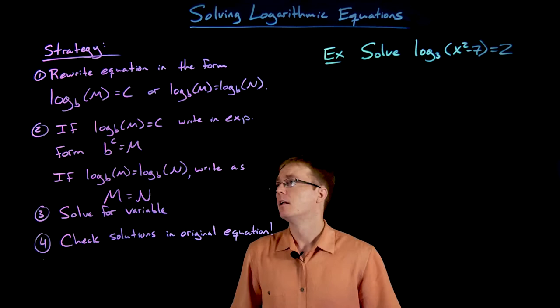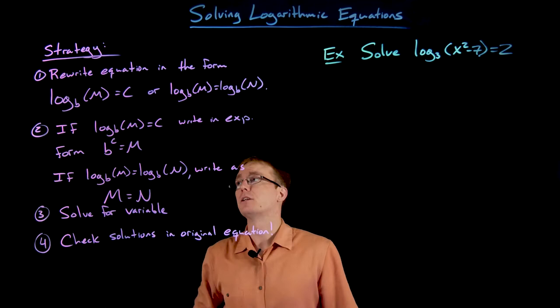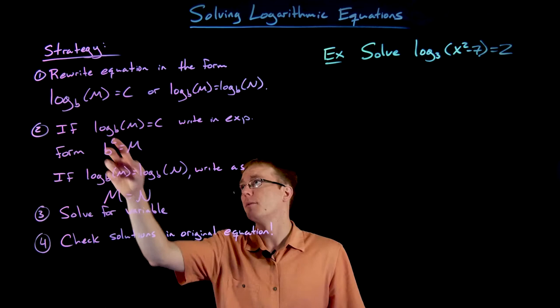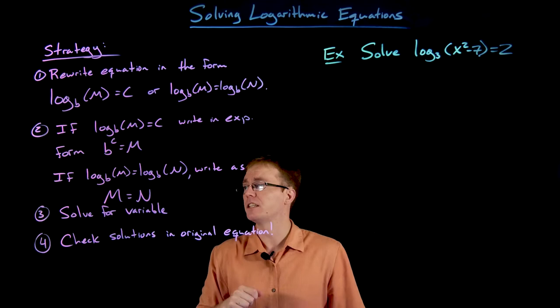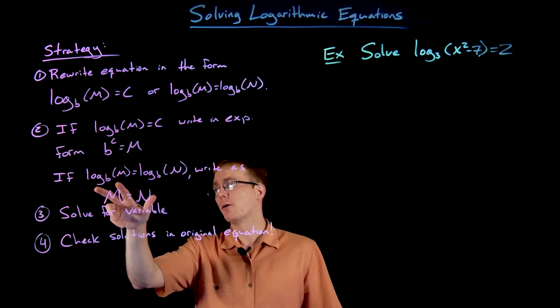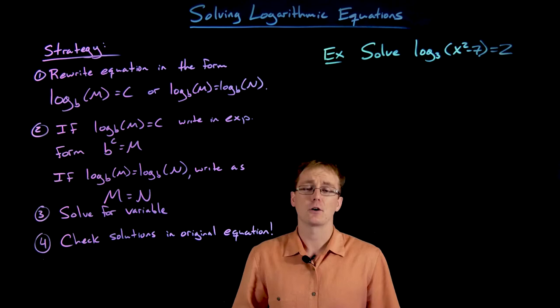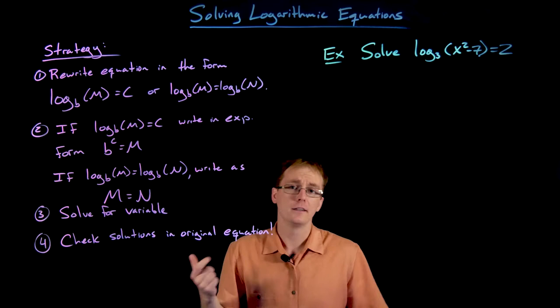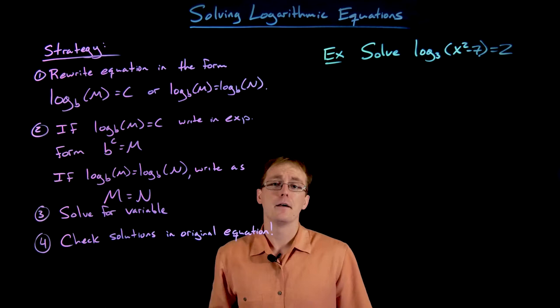We're going to have two paths to follow depending on how we are able to rewrite the original equation. If we can rewrite it as a single log equal to some number, we can convert the logarithmic form into its exponential form — rewrite log base b of m equals c as b to the power of c equals m — and then solve from there. Or, from the form where log base b of m equals log base b of n, we can use the fact that logarithmic functions are one-to-one, so we get the same output only when the inputs are the same. That means m must equal n, so we drop the log, set the insides equal, and solve.